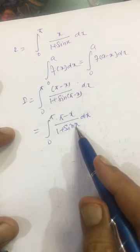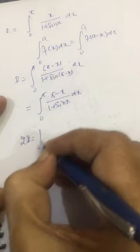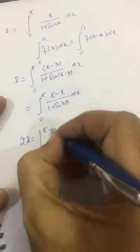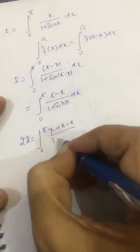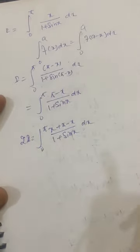Adding this integral and the given integral we get 2i equal to integral 0 to pi of (x plus pi minus x) divided by (1 plus sin x) dx.